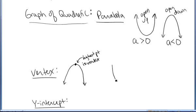If you have a parabola that opens up, then the very lowest point on the graph is called the vertex.